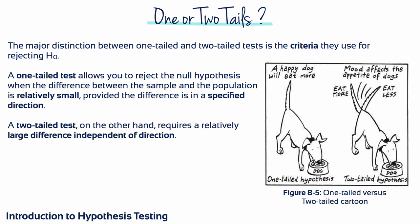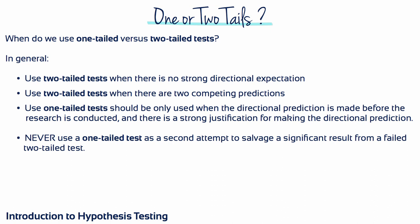The major distinction between one-tailed and two-tailed tests is the criteria they use for rejecting the null hypothesis. A one-tailed test allows you to reject the null hypothesis when the difference between the sample and the population is relatively small, provided the difference is in a specified direction. A two-tailed test, on the other hand, requires a relatively large difference independent of direction. In general, use a two-tailed test when there is no strong directional expectation or when there are two competing predictions. You should use a one-tailed test only when the directional prediction is made before the research is conducted and there is a strong justification for making the directional prediction.